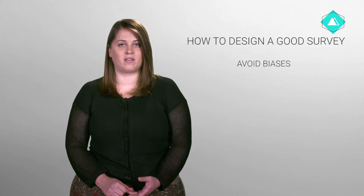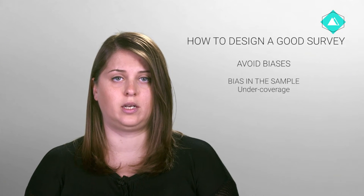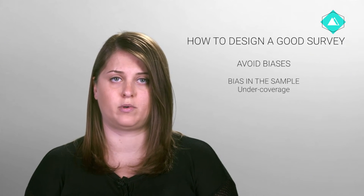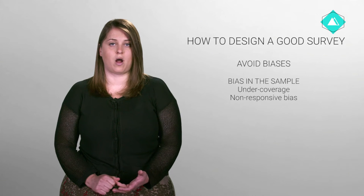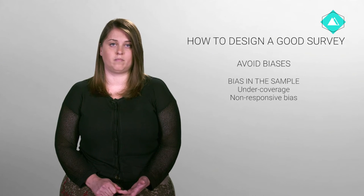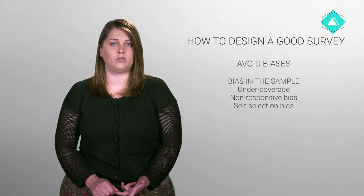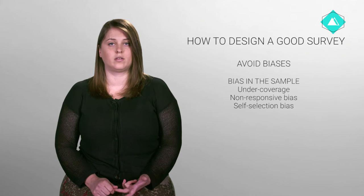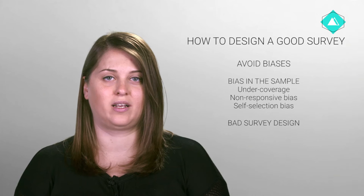When choosing a sampling method, it's really important to be aware of possible biases and try to avoid them. Here are some of the most common types of biases. Under-coverage, which means there is an inadequate representation of some members of the population. Non-response bias, when many people chosen for the sample are unwilling or unable to participate in the survey. And self-selection bias — the opposite of non-response bias — occurring in a voluntary sample when those who choose to participate are very similar to each other and thus not representative of the entire population. Bad survey design can also cause bias.